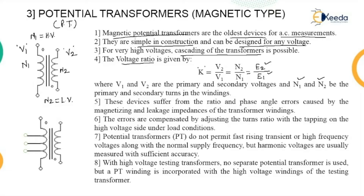These devices suffer from ratio and phase angle errors caused by the magnetizing and leakage impedances. The magnetizing current — used to magnetize the transformer — causes errors. To compensate, the turns ratio is adjusted. For this adjustment, tappings are generally provided on the high voltage (primary) side of the transformer.